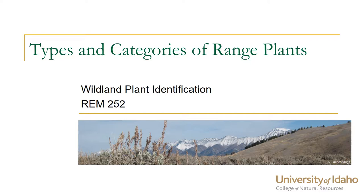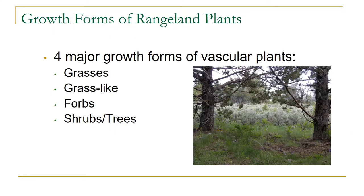Before we can get started in identifying plants and learning the difference between individual species, we have to learn some terminology. This presentation is on the types and categories of rangeland plants. First, there are four growth forms. These are probably familiar terms, but we're going to go through them and make sure you understand what grasses, grass-like plants, forbs, and shrubs and trees are.